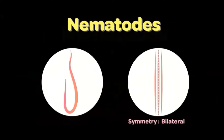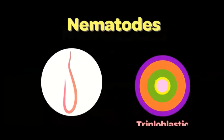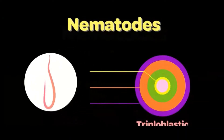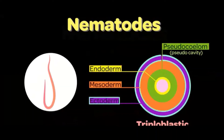Just like the platyhelminthes, these are triploblastic — meaning there are three embryonic layers: the endoderm, mesoderm, and ectoderm. However, these contain a pseudocoelom, that is a pseudocavity, or simply a cavity present between the gut and the body wall.